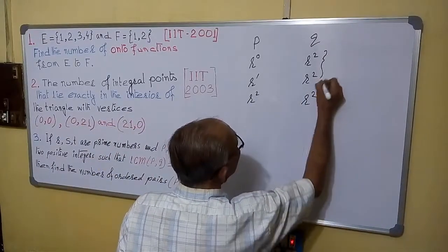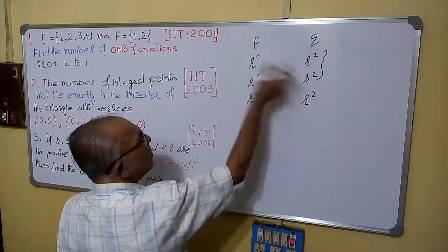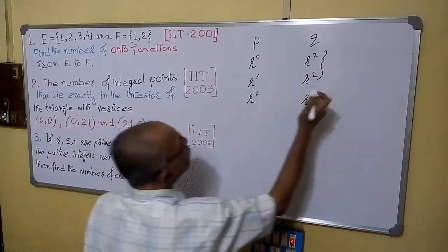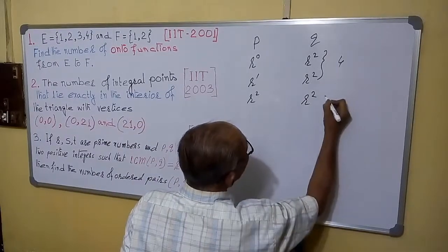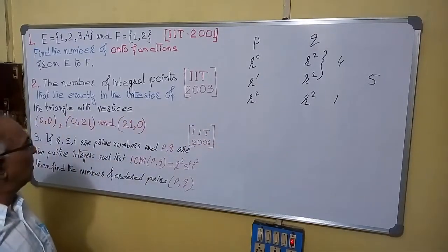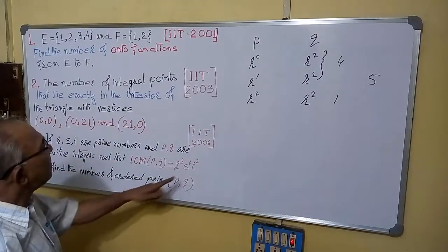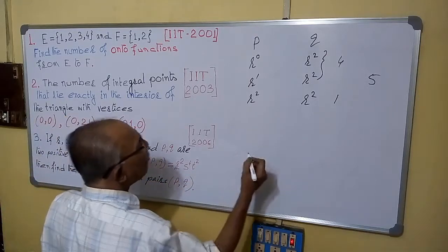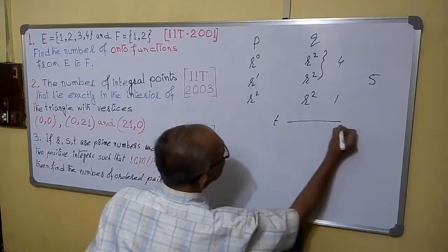Now, these two can be reversed. This one is not possible. So 2 into 2, it will be 4 and this one is 1. So these things can be done in 5 ways. So T also, power is 2. So for T also, it will be 5 ways.